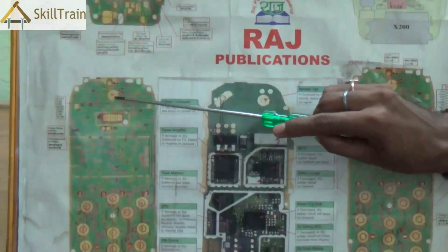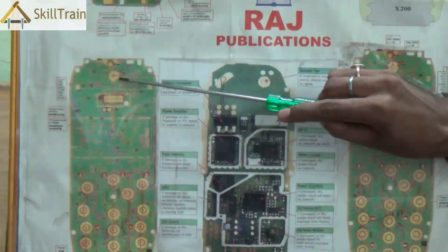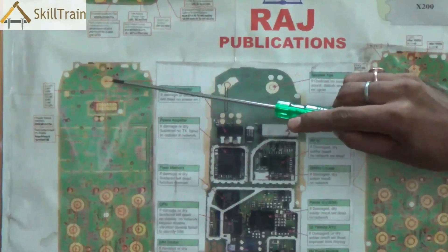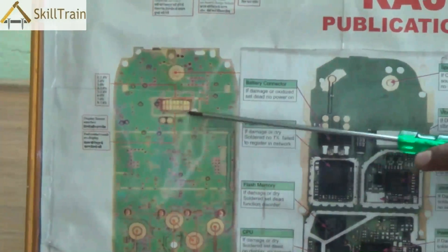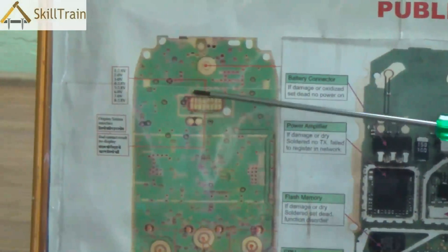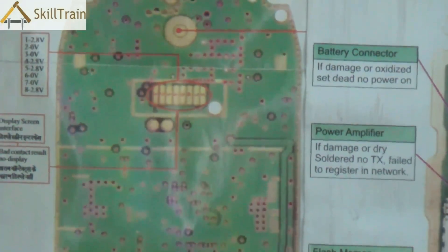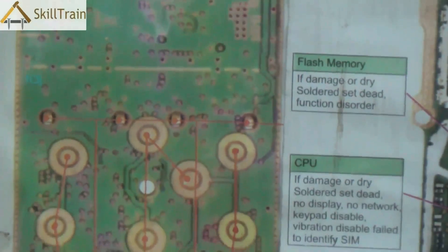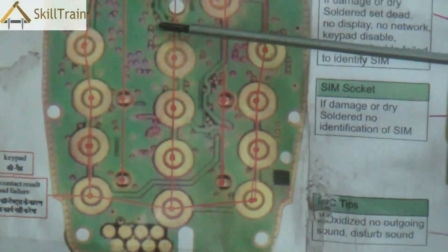The top tip that you see is called the speaker tip. This is where the speaker connects to — the speaker is the device that helps you hear the other person's voice. The next one is a display tip, which is where the display of the mobile connects to. Underneath these is where you have the keypad tips, which is where the number keys or text keys connect to.